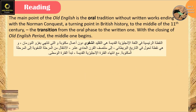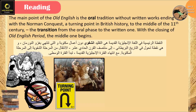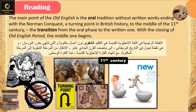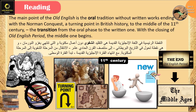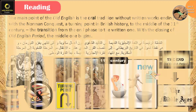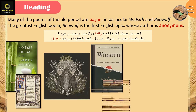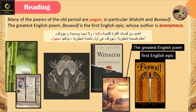The main point of Old English is the oral tradition, without written works, ending with the Norman Conquest — a turning point in British history — in the middle of the 11th century. This marks the transition from the oral phase to the written one. Almost all men of letters accept that English literature begins with Beowulf and belongs to the Germanic traditions of the Anglo-Saxons. Many of the poems of the Old period are pagan, in particular Widsith and Beowulf. The greatest English poem, Beowulf, is the first English epic, whose author is anonymous.